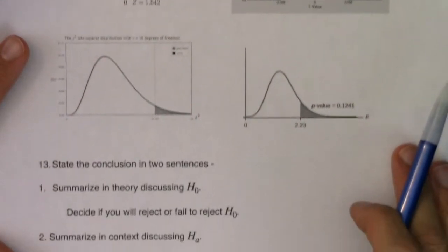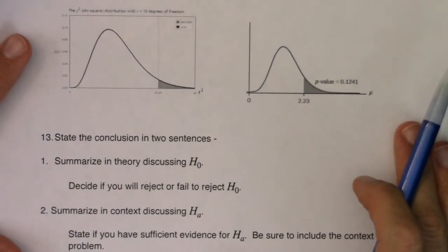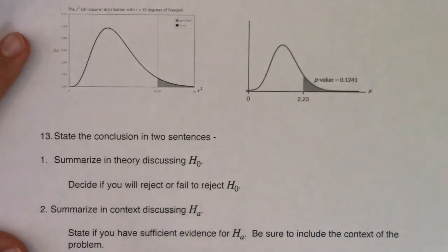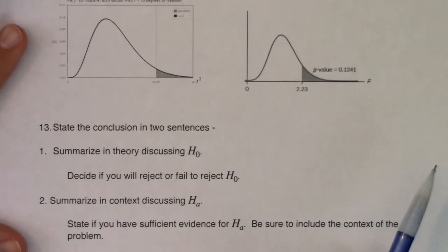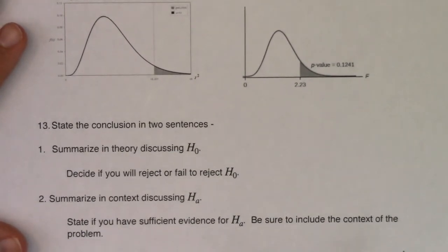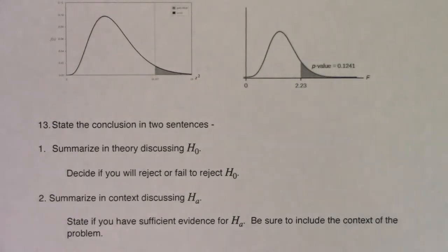Last but not least for step 13, make sure you summarize your conclusion. Tell me what's happening, tell me if you're going to reject or fail to reject the null, and whether or not you have sufficient evidence for the alternate, and make sure you include that context. So with that guys, that's it. Congrats, you made it through 13 chapters. You rock, you're awesome, thanks for putting up with me and my bad jokes as we went through this. We're on to the final. Take care guys, bye.